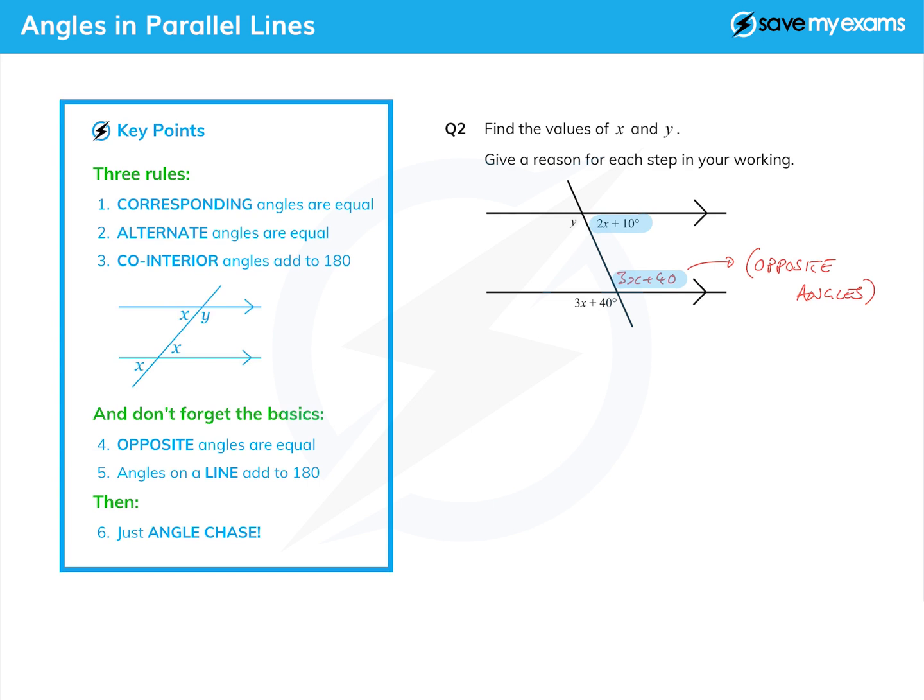And again, the reason: co-interior angles add up to 180. But actually, co-interior angles is fine, and I've shown they add up to 180 by putting the equals 180 on it.